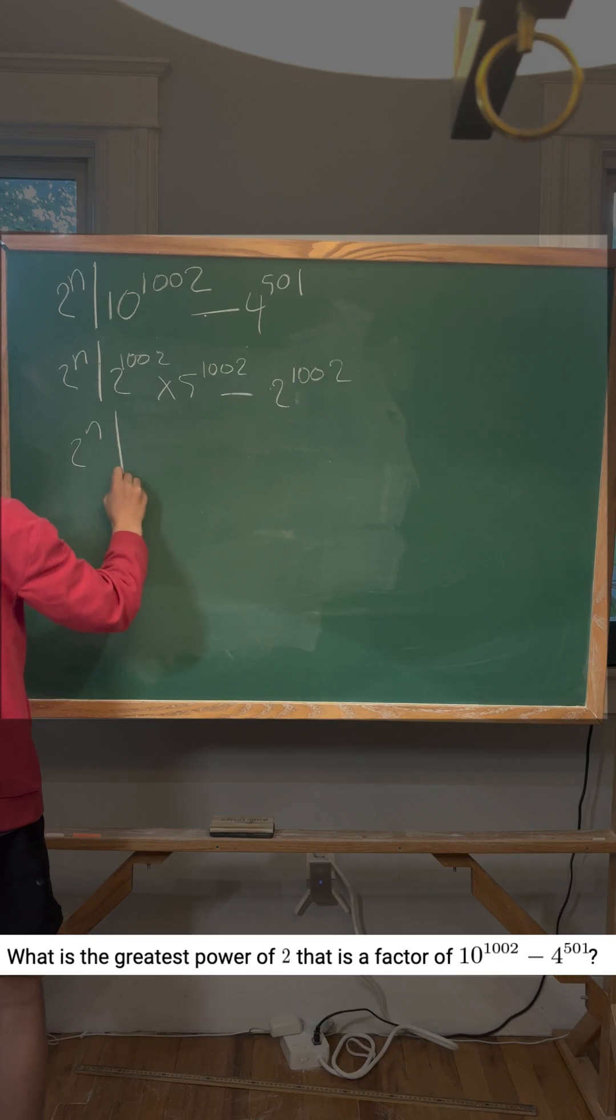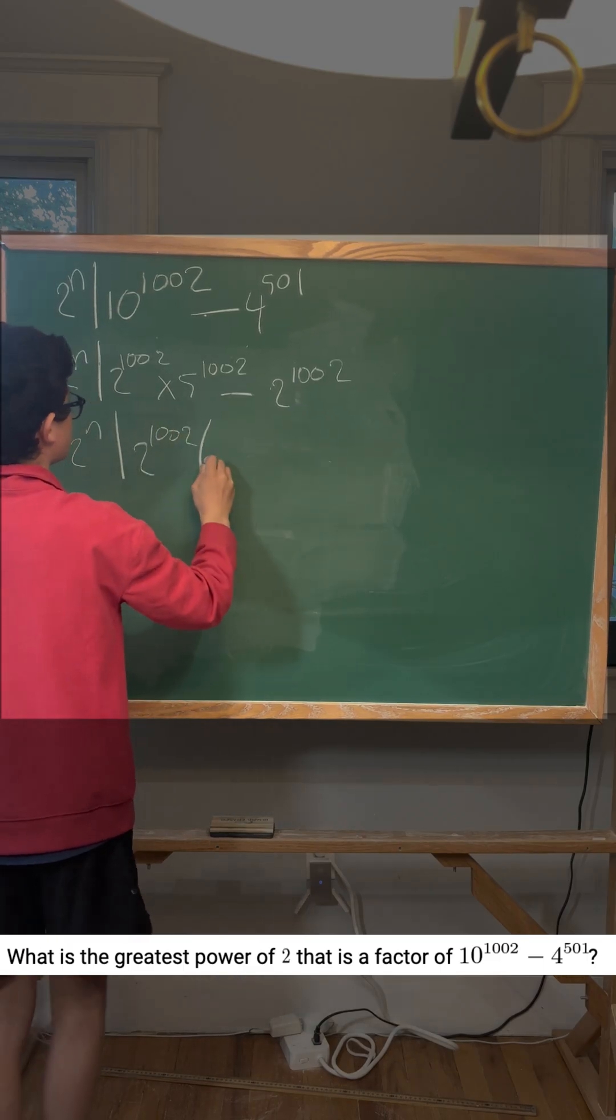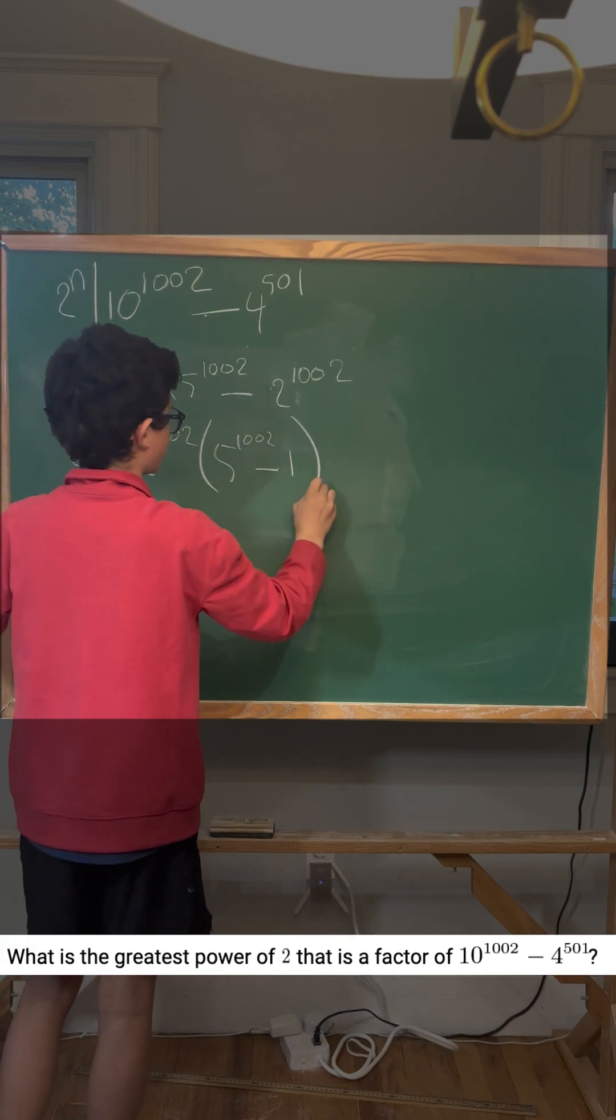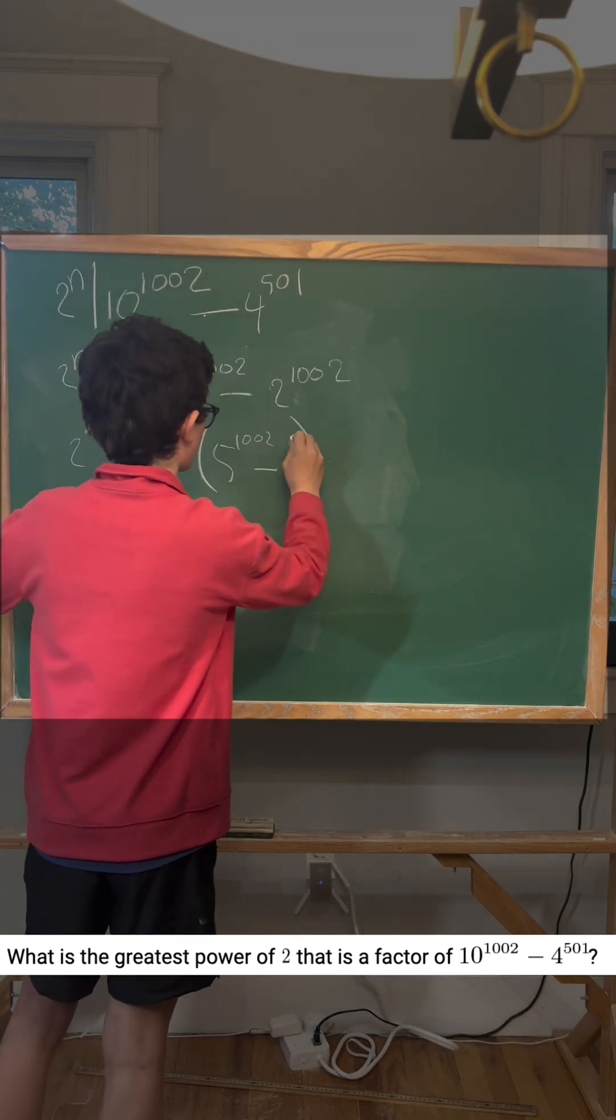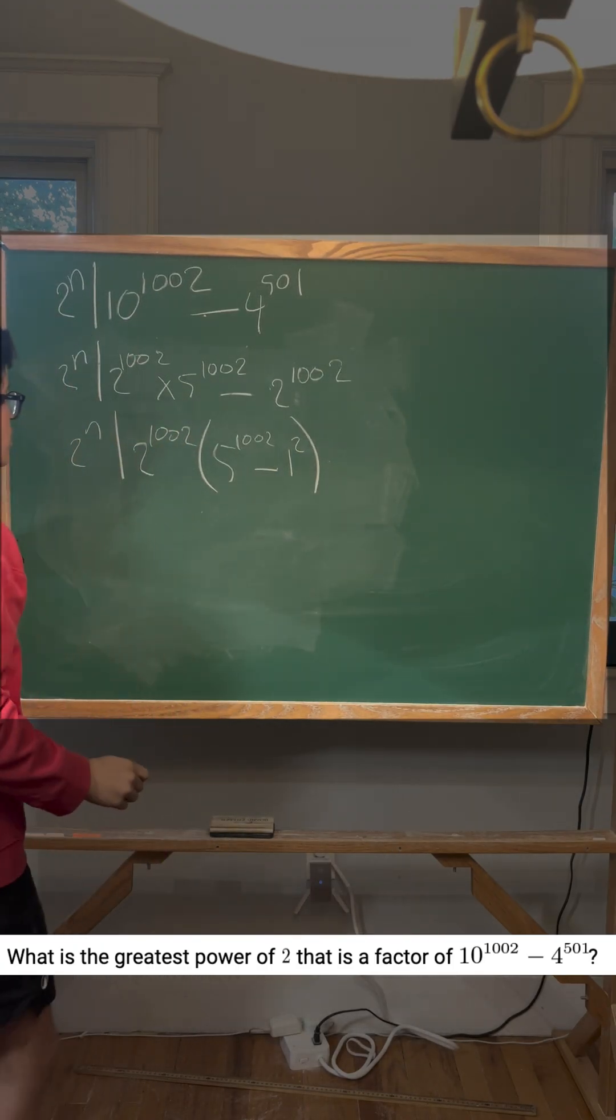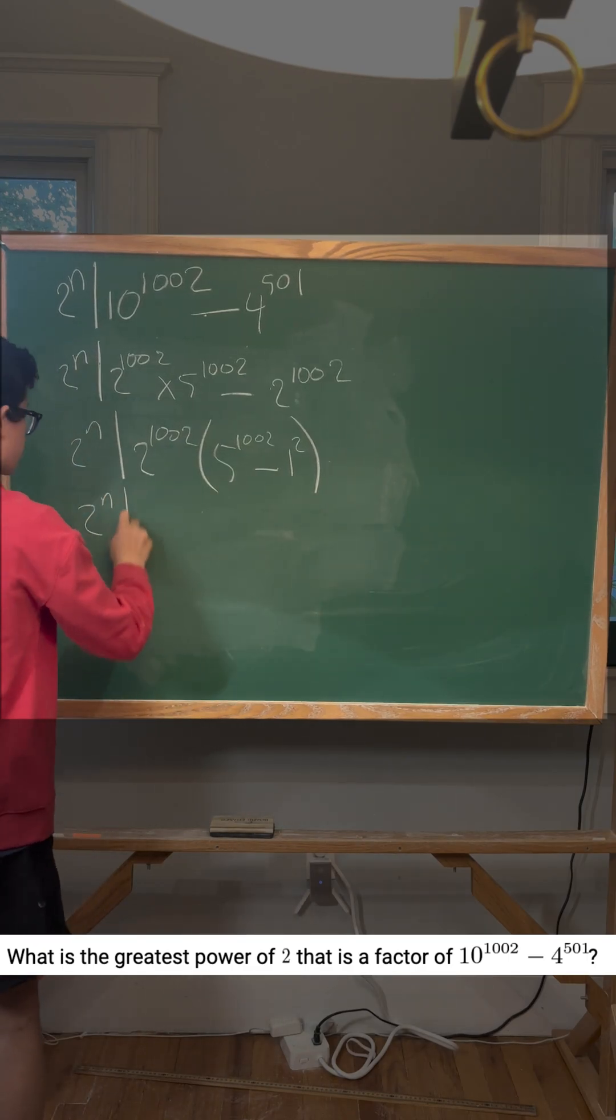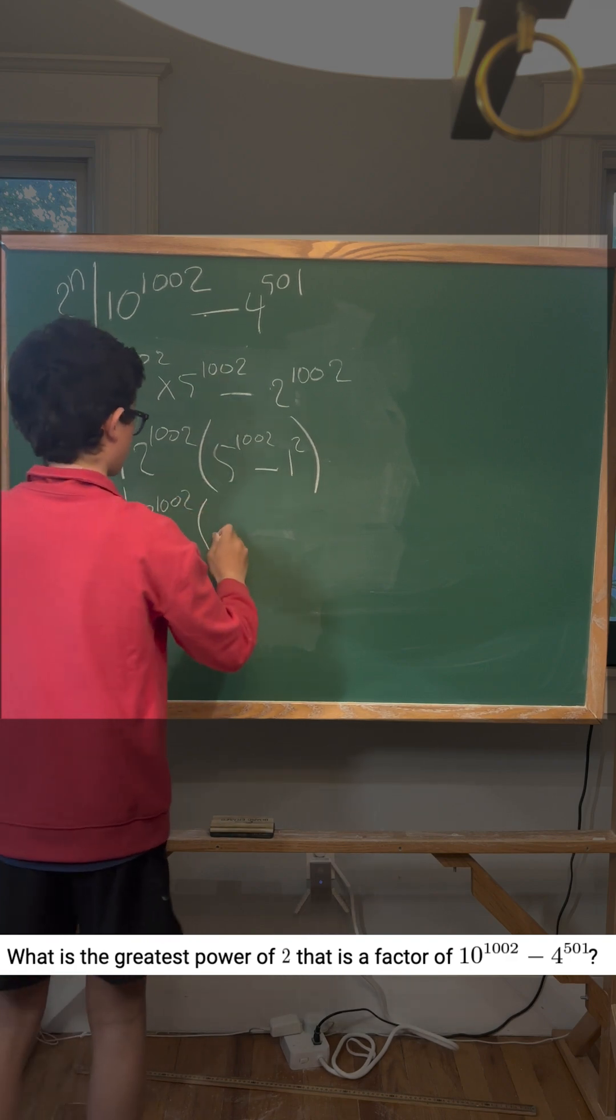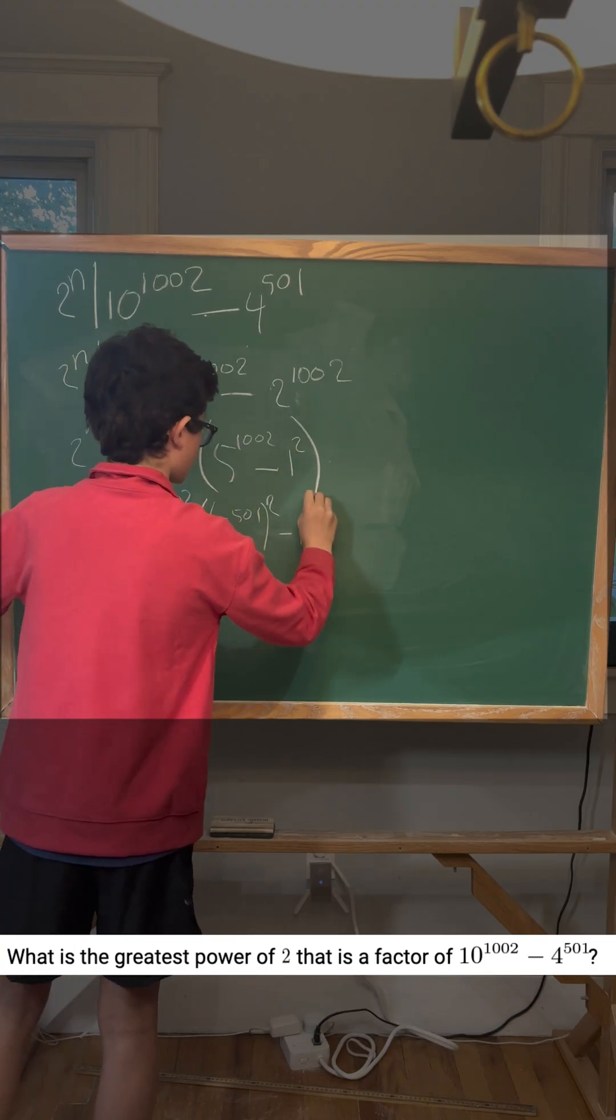So it would be 2^n divides 2^1002 times 5^1002 minus 1. So this 1, we can write it as 1 squared. So we can rewrite this as 2^n divides 2^1002 times 5^501 squared minus 1 squared.